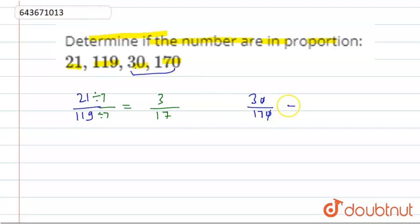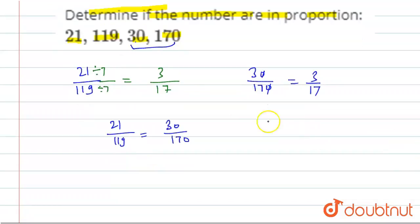Dividing by 10, this will be equal to 3 by 17. So 21 by 119 is also equal to 30 by 170 because these are equivalent fractions.